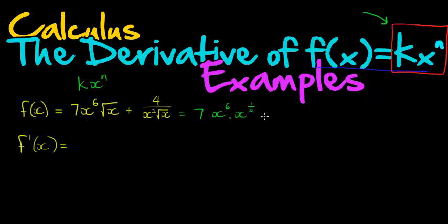And same with this one, we can have plus 4x to the power of negative 2, x to the power of negative 1 half. Okay, it's still not my single base with exponent. But again, that's not a problem because we know that when bases are multiplied, same bases, we can add up the exponents.